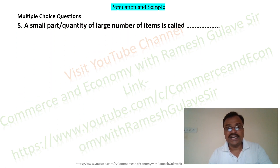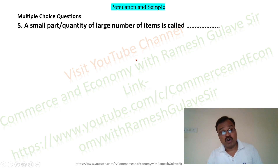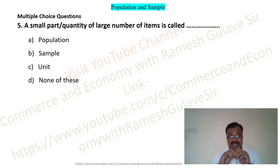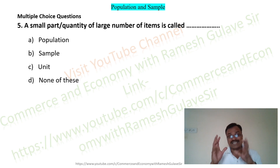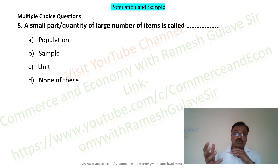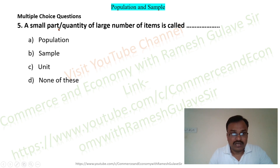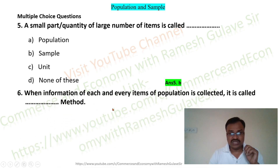The next question says: a small part or quantity of a large number of items is called dash. The options are: population, sample, unit, and none of these. Population is the total number of observations under study. A sample is the part of a large number of items — like in daily life when we check the quality of grains by inspecting a handful and deciding about the whole sack. So option B, sample, is the right answer.